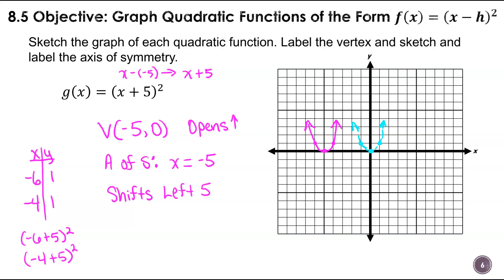This is the graph of g of x equals x plus five squared. My axis of symmetry goes through my vertex at x equals negative five, and my vertex is (-5, 0). And that's it — we have a graph. I'm going to stop this video and pick this lesson up on the next one.